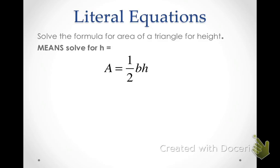Remember that a fraction is the same thing as division, so if I multiply both sides by 2, this 1/2 and the 2 will cancel out. If you put 1/2 times 2 in your calculator, you'll get 1, so those have canceled out. On the left we have 2a, and on the right I'm left with b and h.